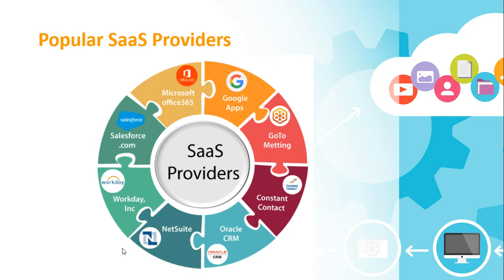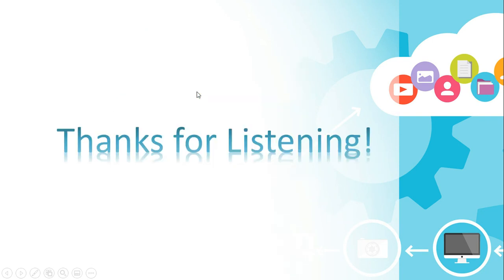These are the popular SaaS providers: Salesforce.com, Workday Incorporated, NetSuite, Oracle CRM, Constant Contact, GoToMeeting, and of course the most popular for us — Microsoft Office 365 and Google Apps. This concludes our discussion on the three types of cloud service models, or the three layers of cloud computing. I hope that you have learned a lot for future use. Thank you and God bless everyone.